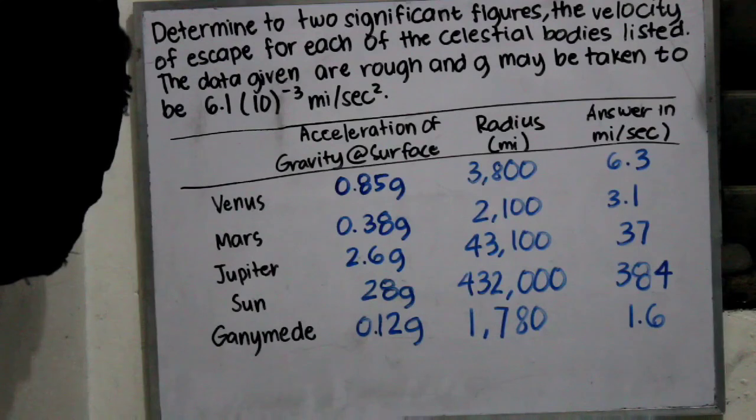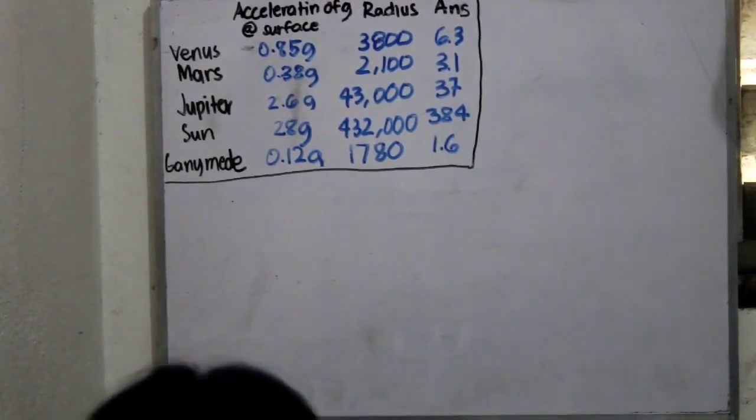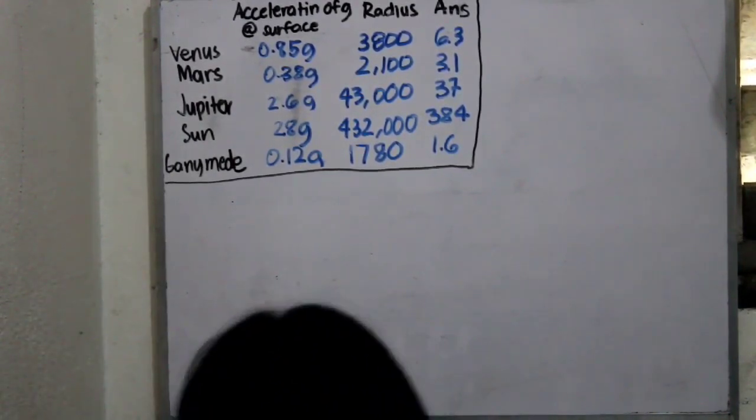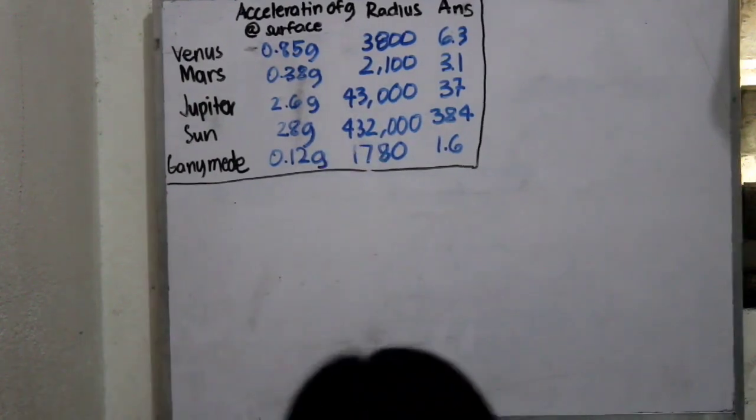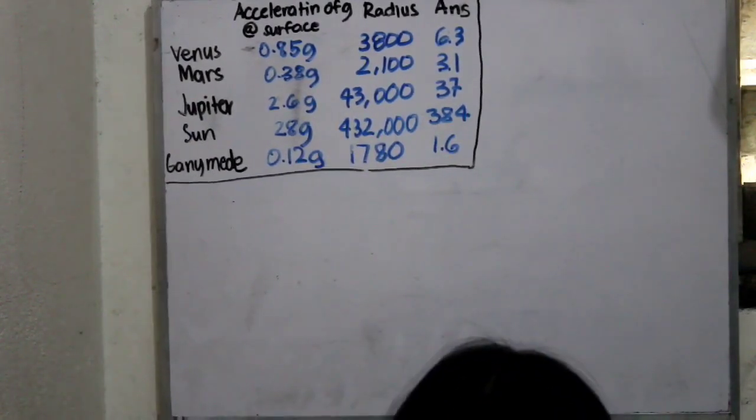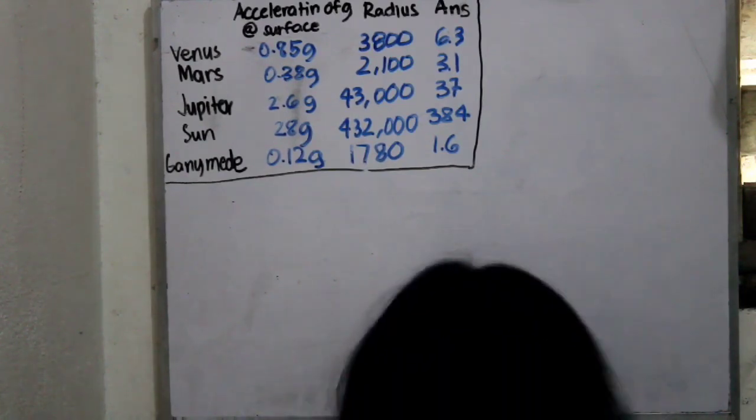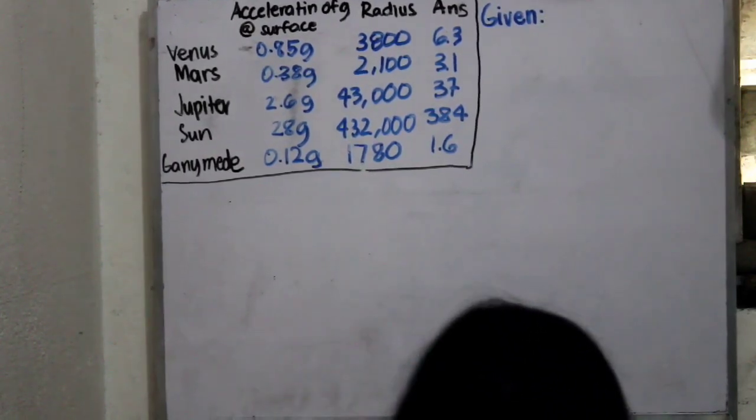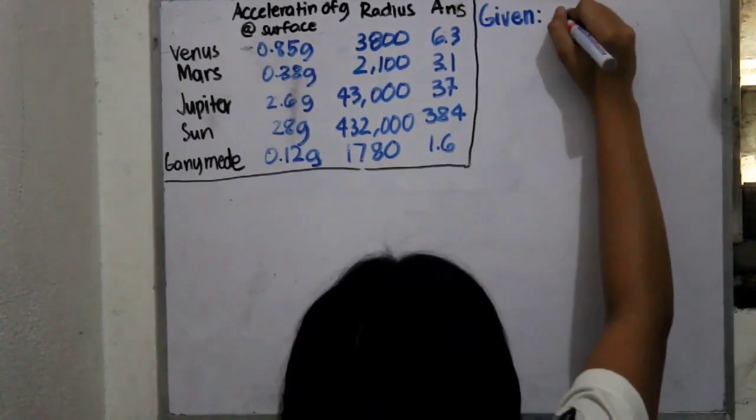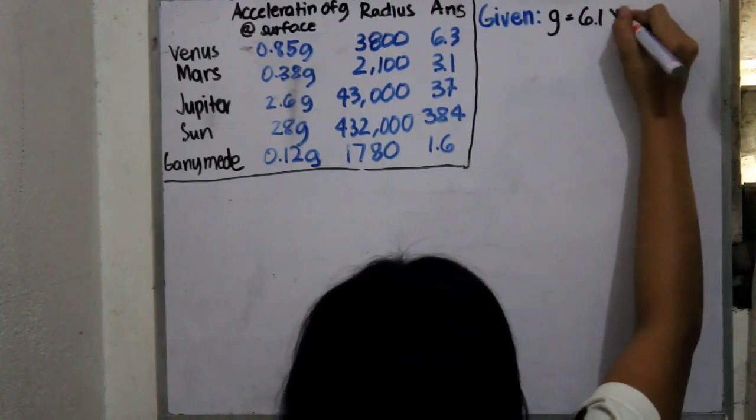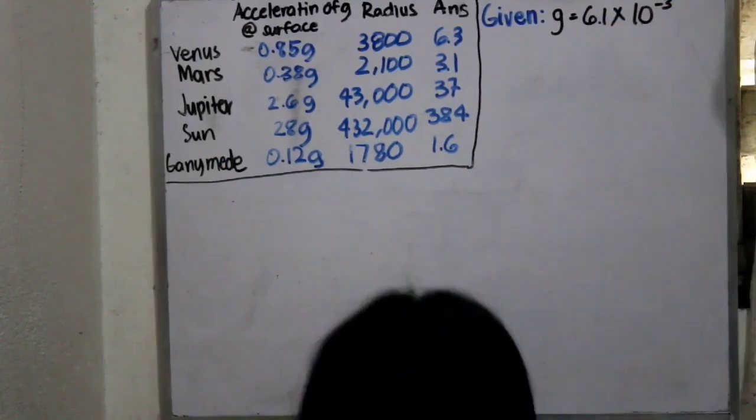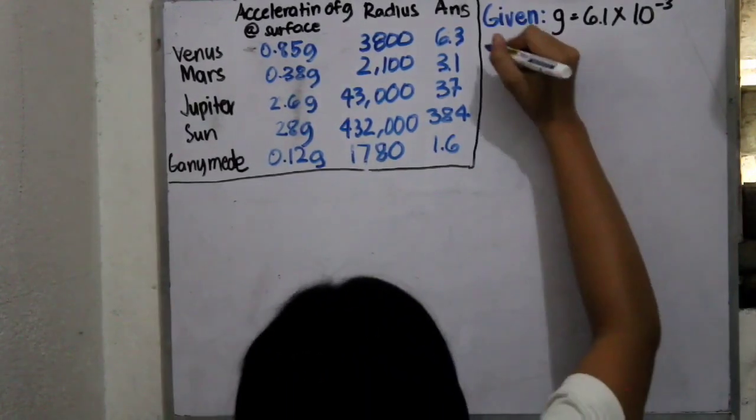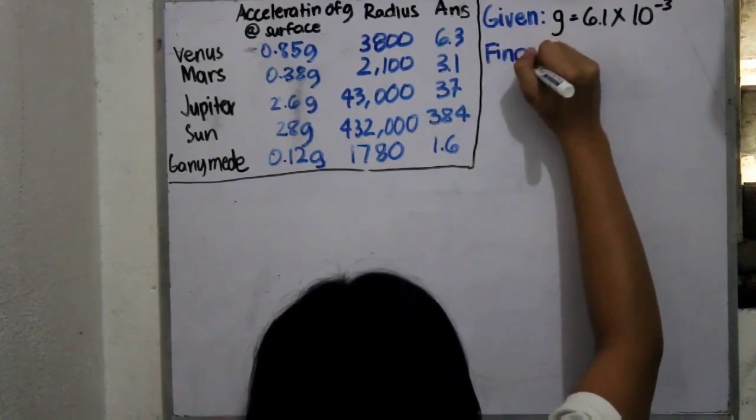I just put the table and I deleted already the problem. So as I said, I just put in the table. So first, we have to put our given in the problem. The given is 6.1 by 10 raised to negative 3 miles per second squared. Bear with me, I forgot to put the miles per second squared. Next is, we have to find the missing.